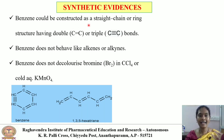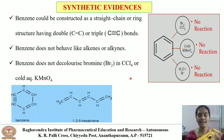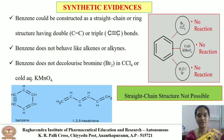Benzene could be considered as a straight chain or ring structure with double or triple bonds, but benzene does not behave like alkenes and alkynes. Benzene does not undergo addition reactions — there is no reaction with bromine, no reaction with KMnO4, and no reaction with water. That means benzene does not decolorize bromine in CCl4 or cold aqueous KMnO4. So with this synthetic evidence, we can say that benzene is not straight chain; it has a cyclic structure.